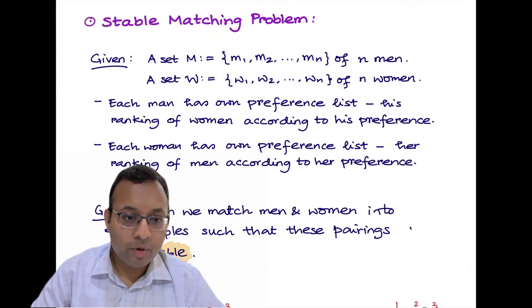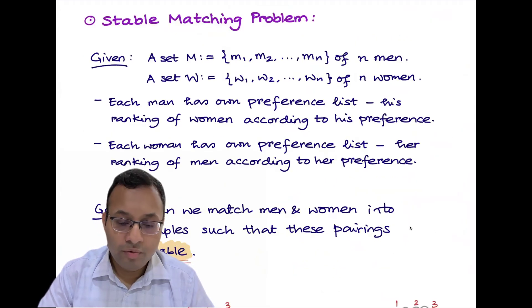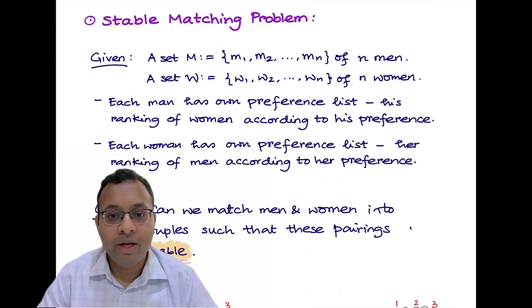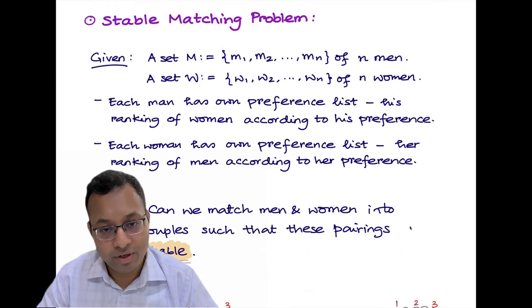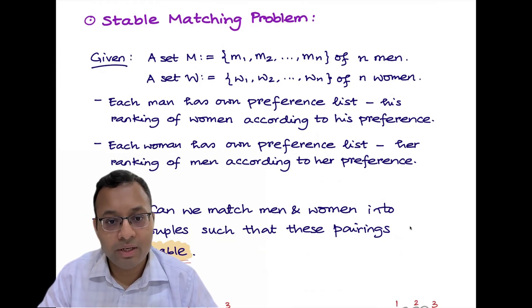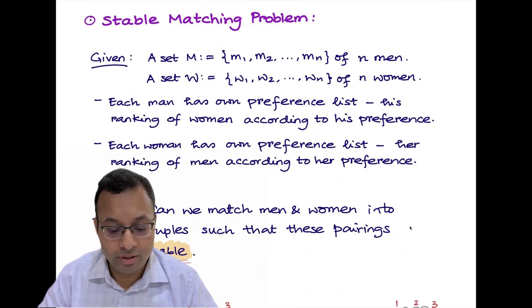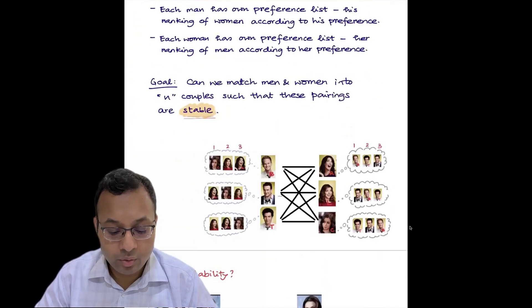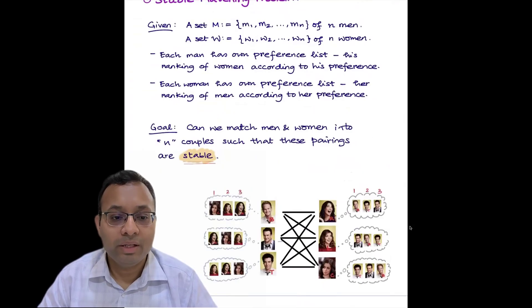Let's start with the problem definition. In the Stable Matching Problem we are given two sets. On the left side we have n men m1, m2 up to mn, and on the right side we have n women w1, w2, wn. Each man has their own preference list — a complete ordering of women according to their preference. Similarly, each woman has her own preference list, her ranking of men. Our goal is to match men and women into n couples such that these pairings are stable.